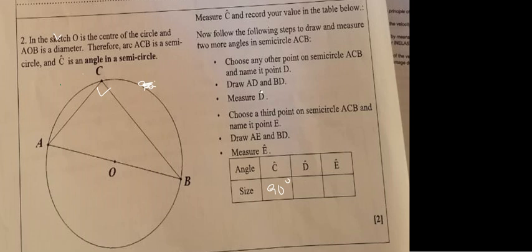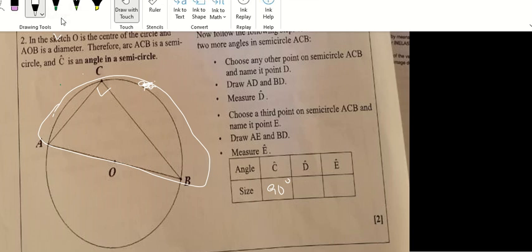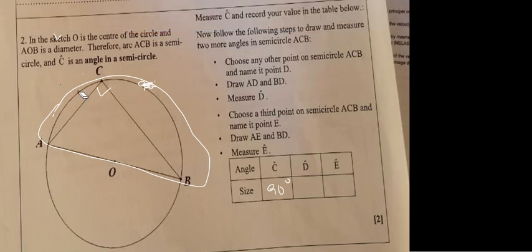Choose any other point on the semicircle ACP and name it point D. That means we should take any point here on this space.